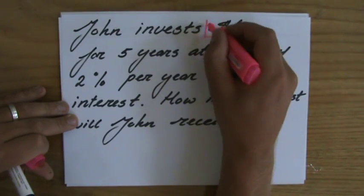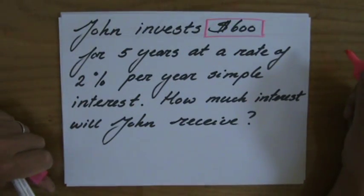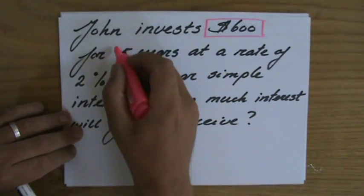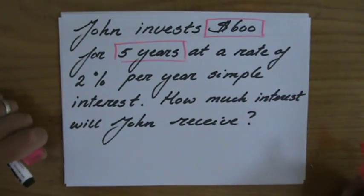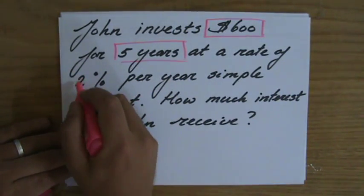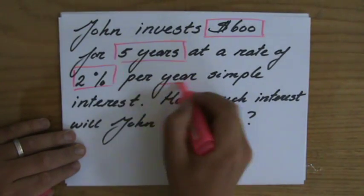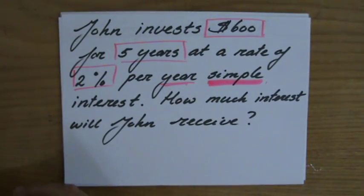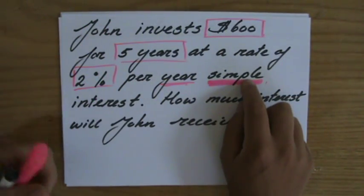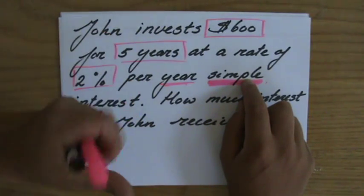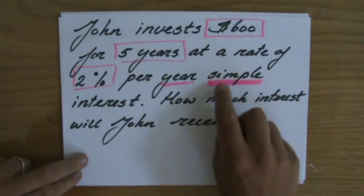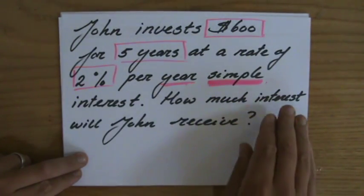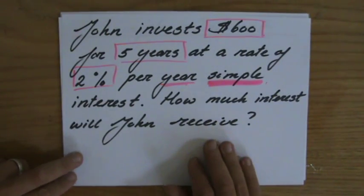Of course, how much money I invest is important — six hundred dollars; I'm giving the bank six hundred dollars. For how long is also very important — five years, which is quite long. And I'm getting two percent per year. It says simple interest, and that would normally be in bold to distinguish it from compound interest, but it's still very important to be aware of.